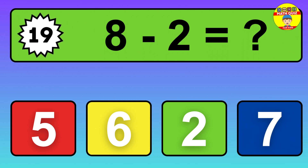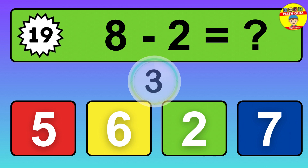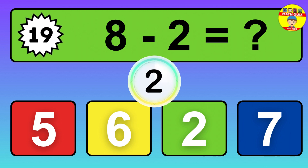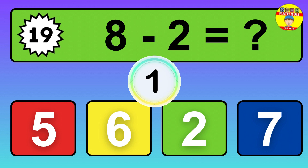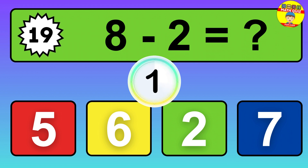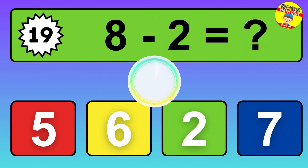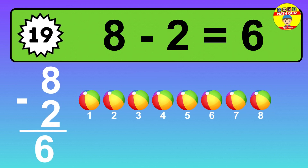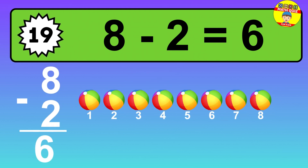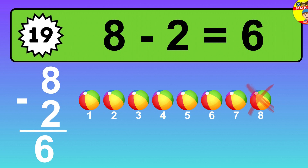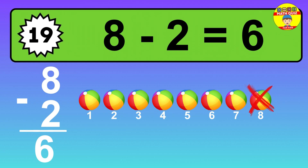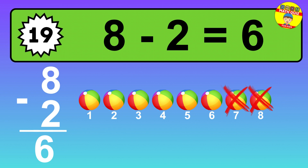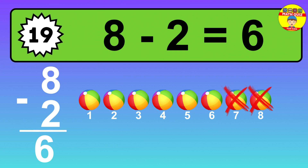Question 19. 8 minus 2 equals what? So the answer is 8 minus 2 is 6. Let's count it. 1, 2, 3, 4, 5, 6.